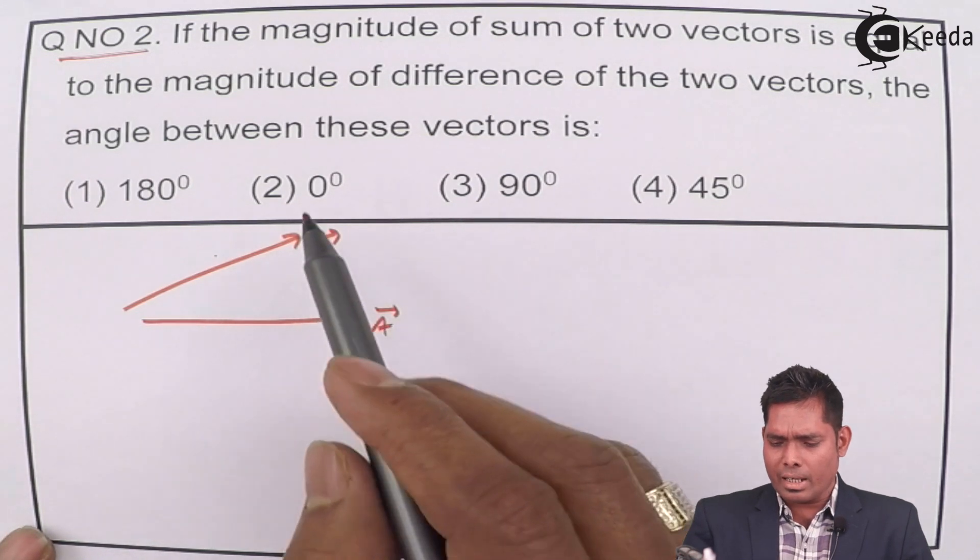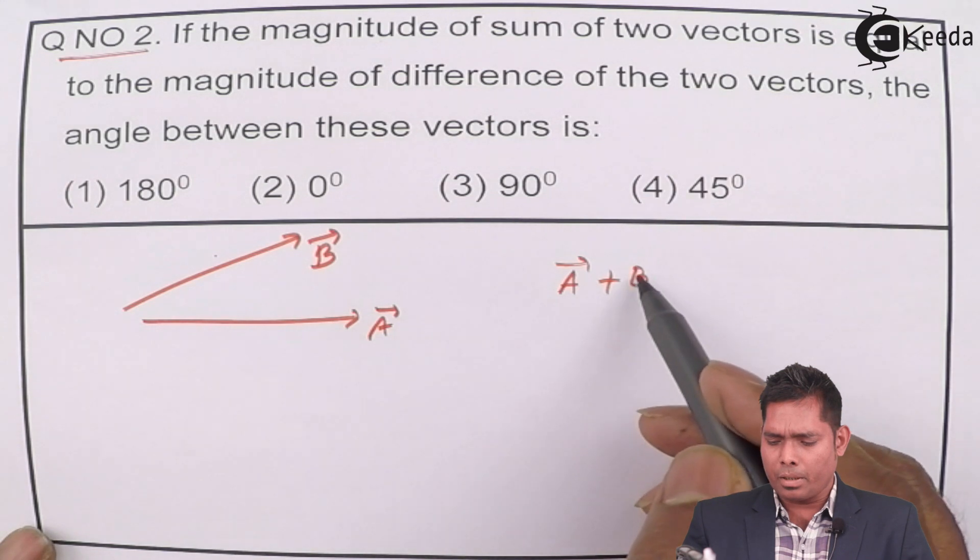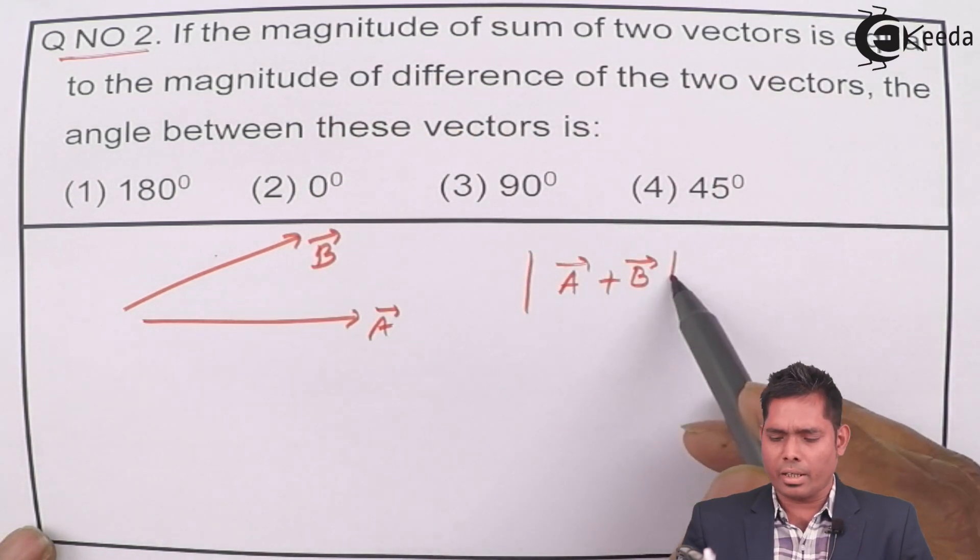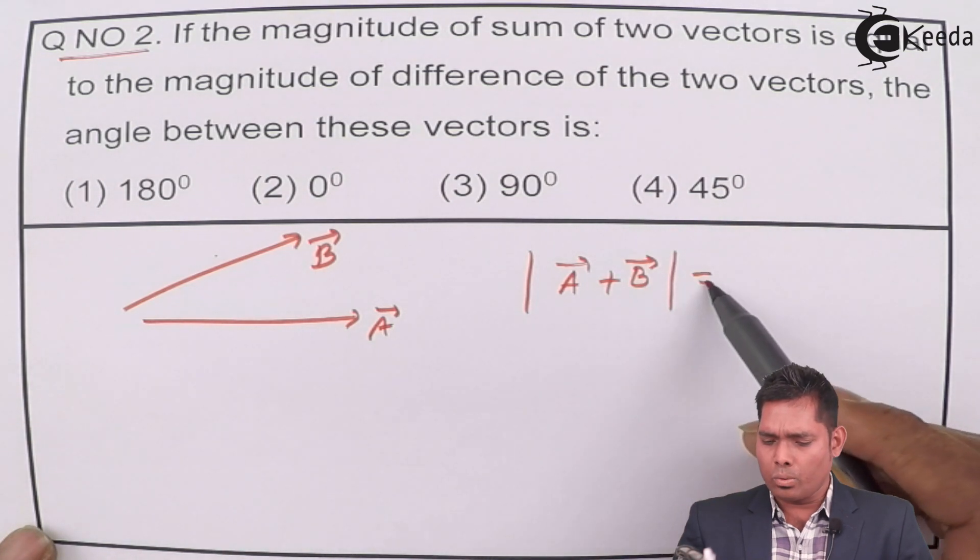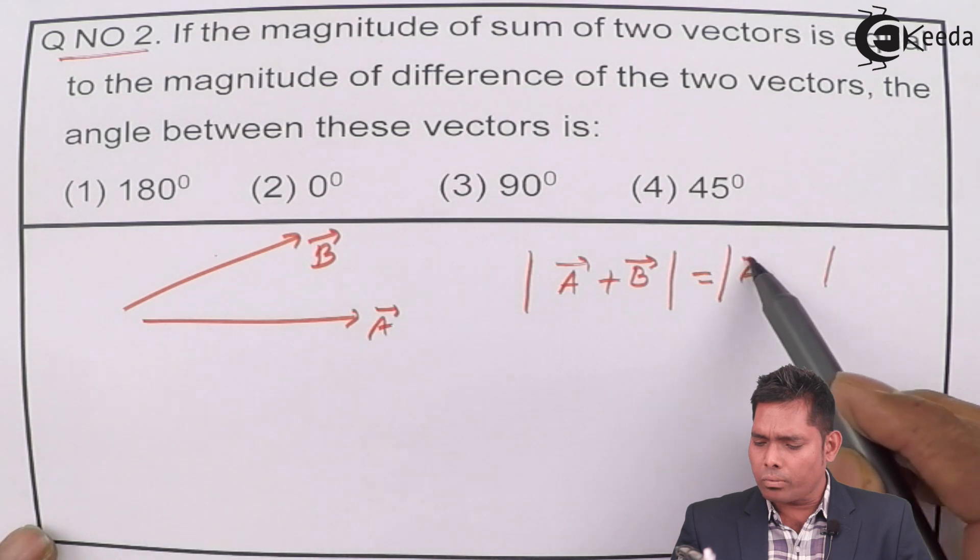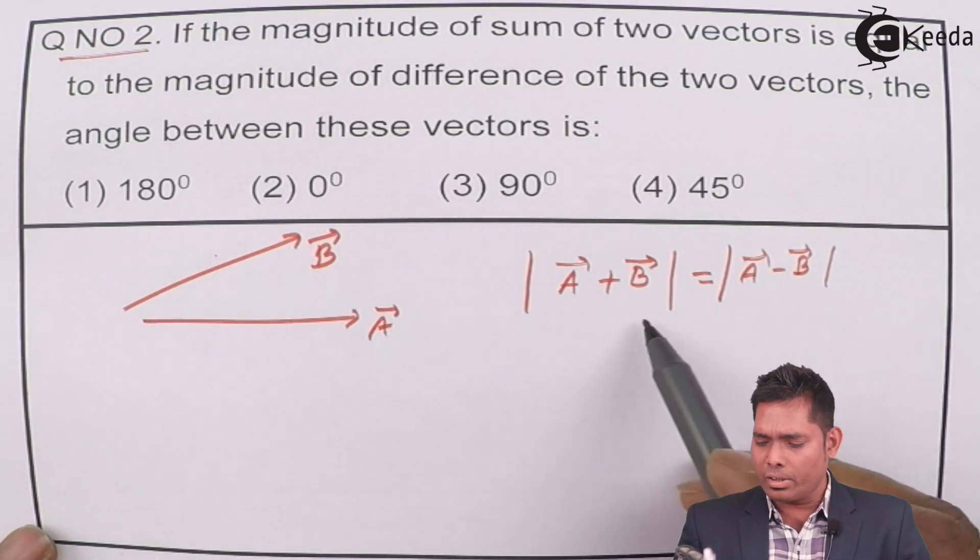then it says that if the sum of the two vectors, A plus B vector, the magnitude of the sum of the two vectors is equal to the magnitude of the difference of the two vectors. So this is the given condition, this is given,